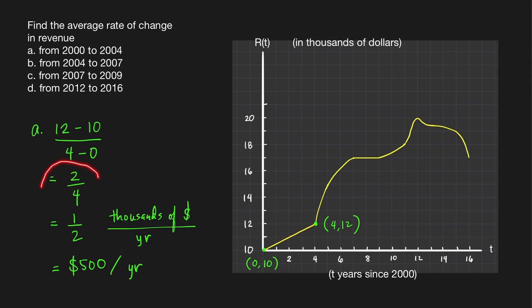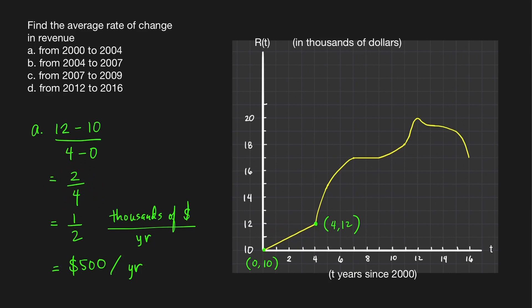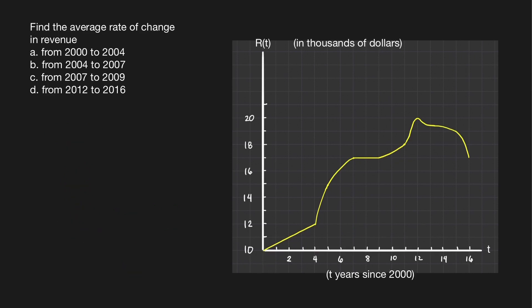The fastest way to find this average rate of change is actually using rise over run. If you move from this point to this point, you have to move upward by 2 units and then run to the right by 4 units. So you rise by 2 units and run to the right by 4 units, giving an average rate of change equal to 1/2. Now let's find the average rate of change from 2004 to 2007.